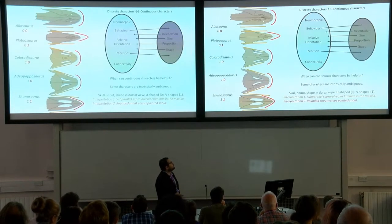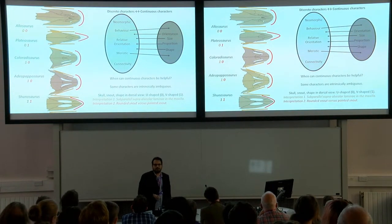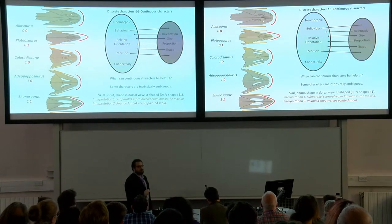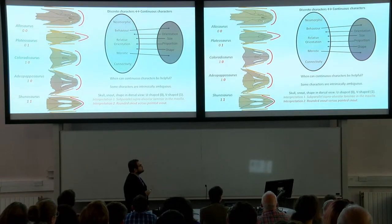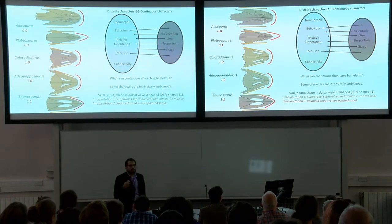The second part is when we get to characters that could be treated as continuous. Here I have an example of a character where the disagreements were based only on how you were interpreting the character and not on the specimens you were assessing. That character says that the shape of the snout is either V-shaped or U-shaped.